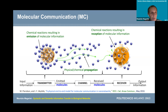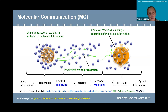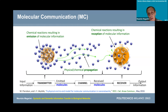This is the classical scheme. We have molecular communication, so we have some chemical reactions in the transmitter that release molecules, which propagate and reach the receiver. When we consider this model, the problem is that of evaluating what is the transfer of information.